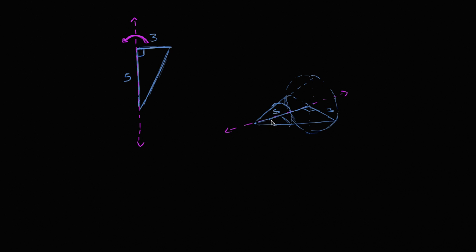So what is the shape? Well, what you see — it's a cone. And if I shade it in, you might see the cone a little bit better. You can see the cone.